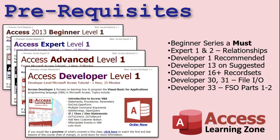This is the 34th developer class. I strongly recommend you've taken all my beginner, expert, and advanced developer classes before this — especially Developer 30 and 31, which covers basic file IO, and Developer 33, which is parts one and two of the file system object. Definitely take Developer 33 before this one. Otherwise you won't get a lot of the stuff I'm talking about, such as the file system object, declaring it, and early and late binding. Developer 33 is definitely a hard prerequisite for this one.